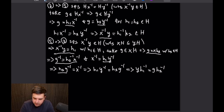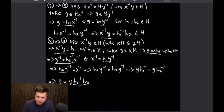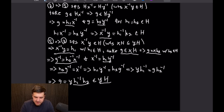We can see that G equals Y times a product of two elements from H, which of course means G is an element from the left coset Y times big H. So we started by taking an arbitrary element from coset XH and showed that it is in coset YH, which is all we need to show containment. This completes 5 implies 3.